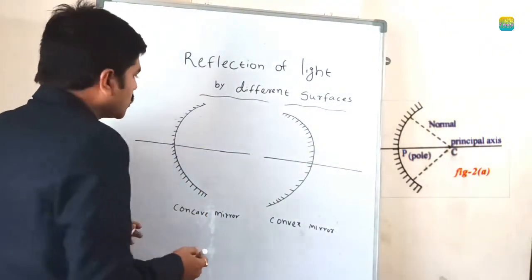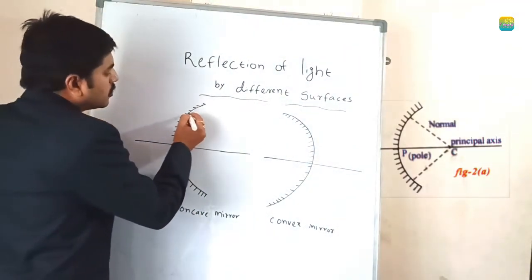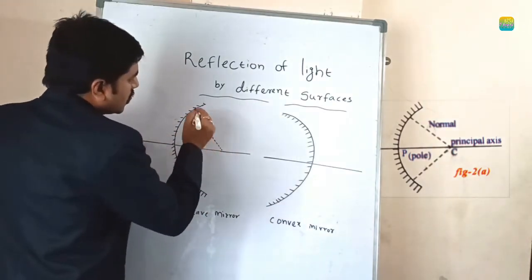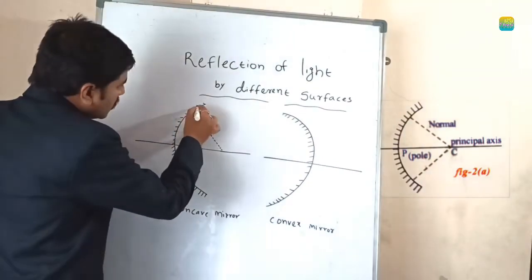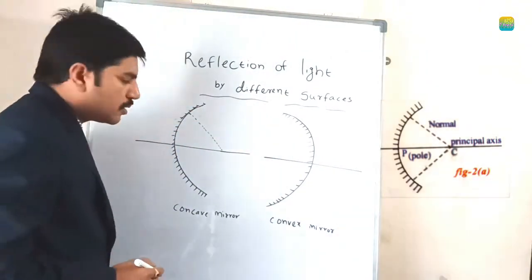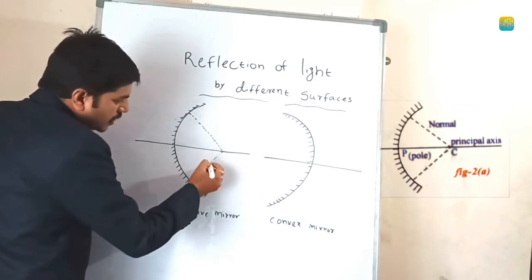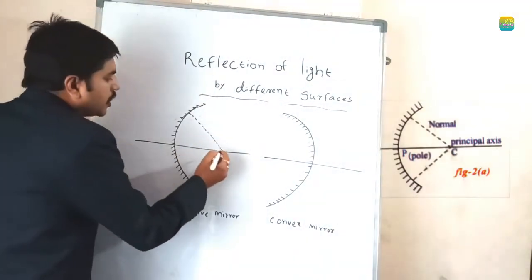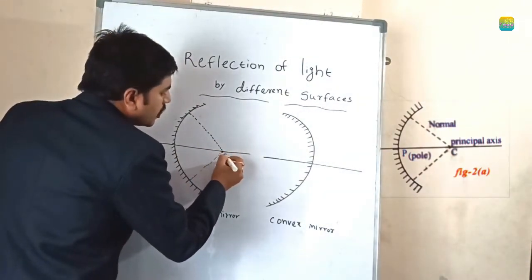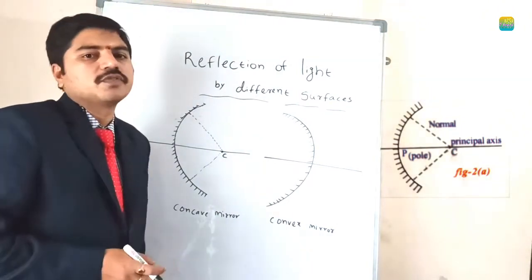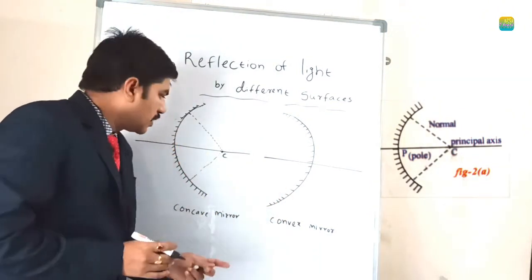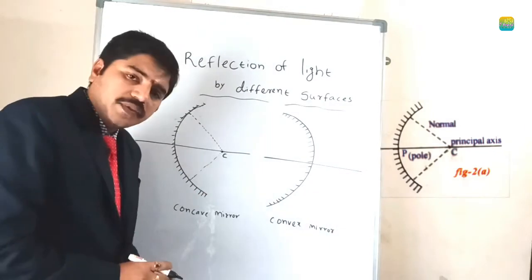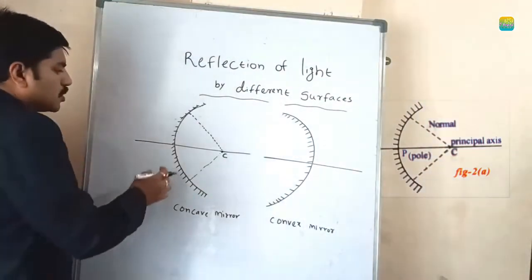Normals are perpendicular lines to the surface area. For a curved surface, if you consider all imaginary perpendicular lines to the curve, the point where all normals meet is called the centre of curvature. So where the centre point of the curvature is identified — where all normals meet at one place — that is said to be the centre of curvature.